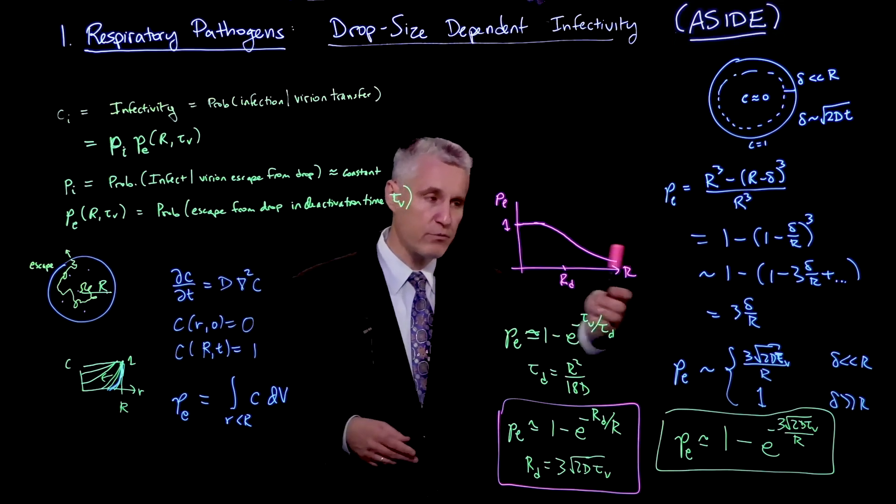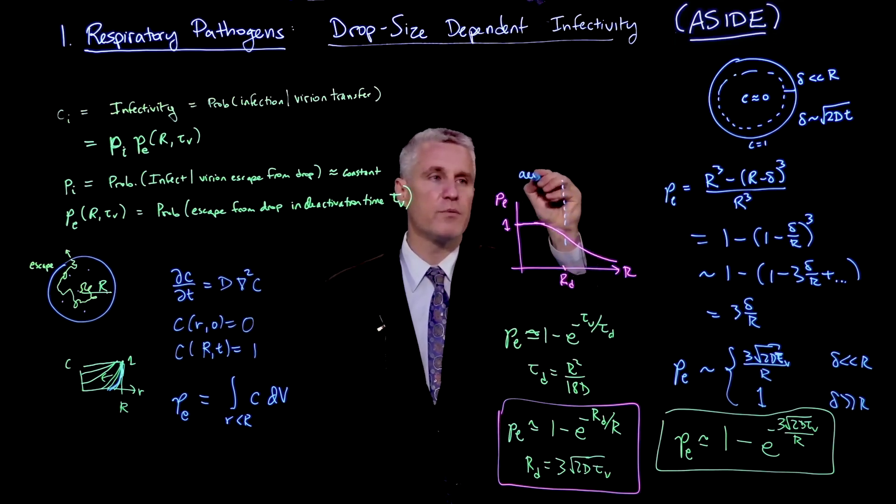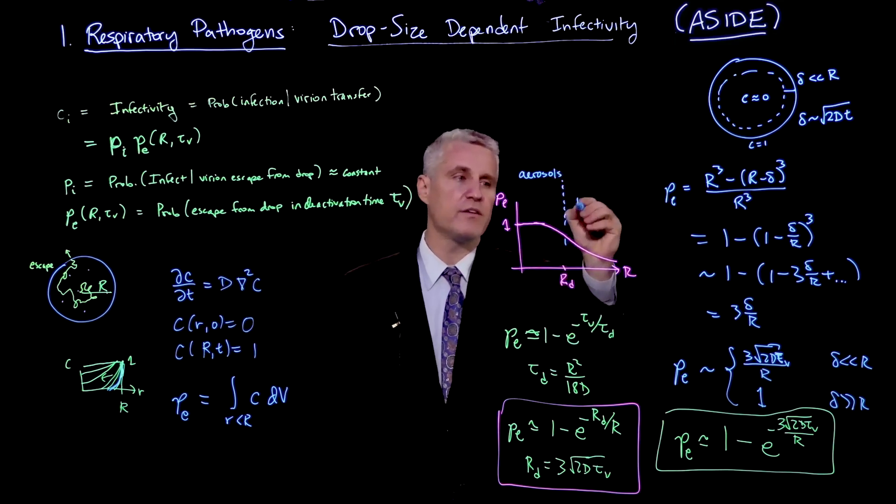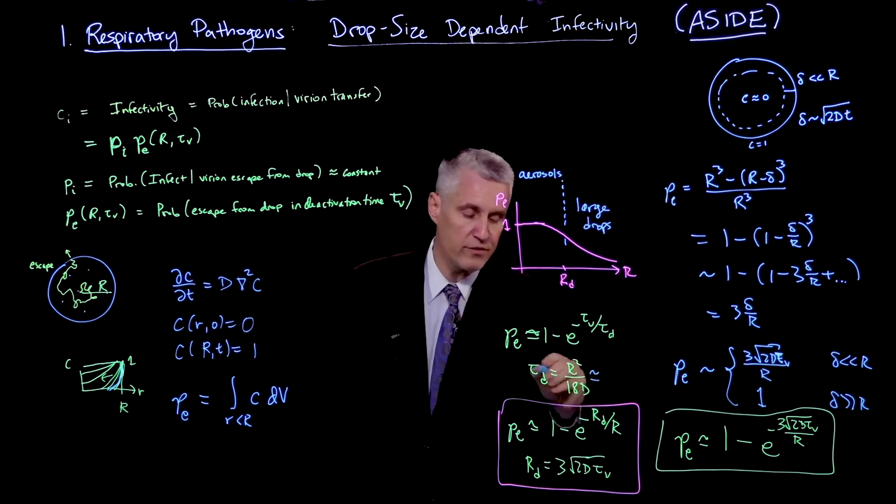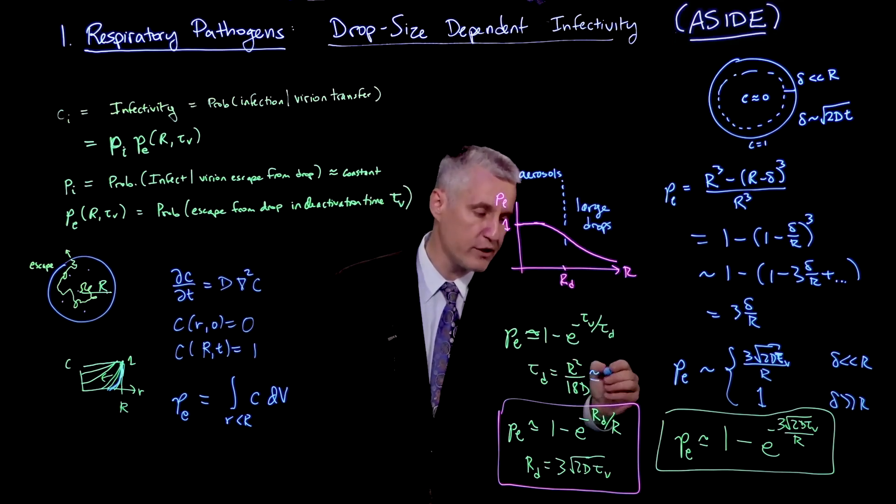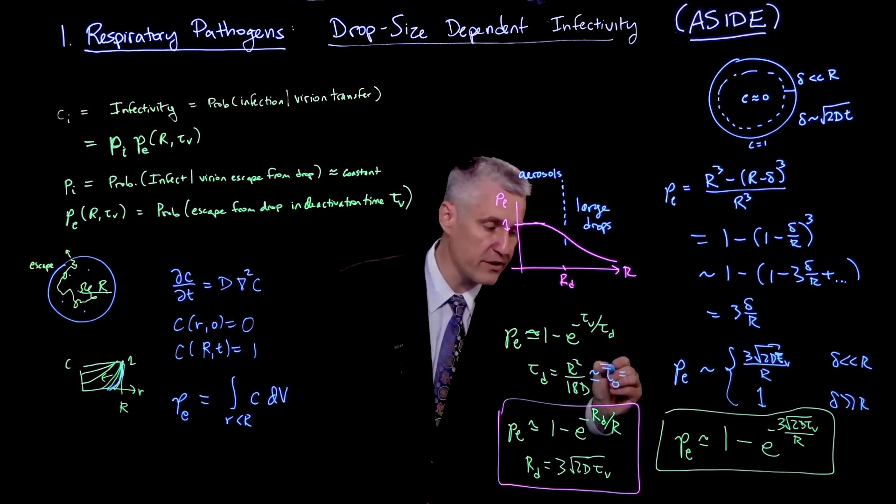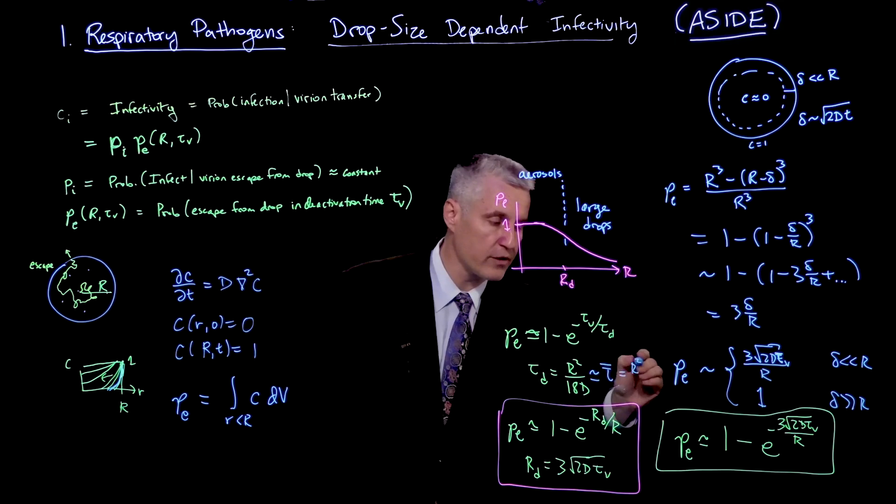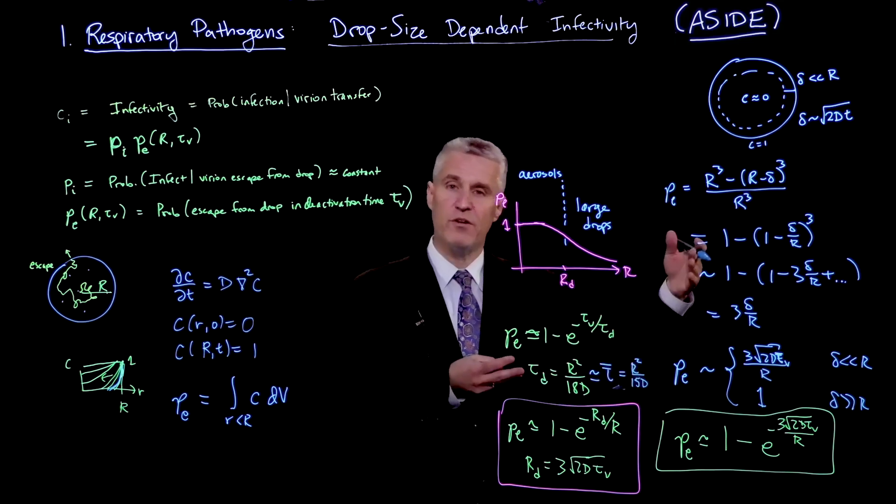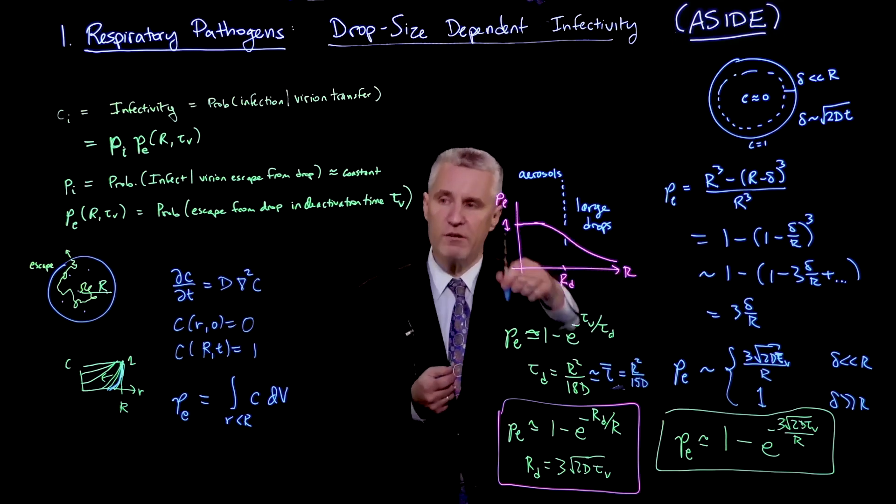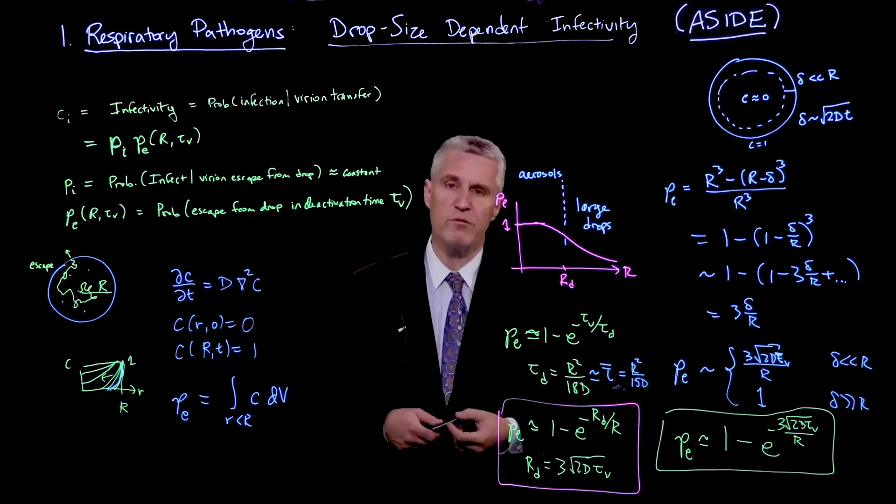This calculation shows you that, as a result, you would expect a size-dependent infectivity. Roughly speaking, if we plug in the numbers, these are the aerosol droplets and these are the large drops. We've already shown that the average escape time starts to become days or even months when we get to large drops. But for the aerosol droplets, in mucus, this timescale is of order minutes to hours, which is reasonable, and you would expect those to be very infectious droplets.